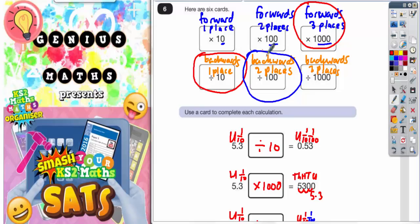how many zeros are there. So one place is one zero, two places is two zeros, three places is three zeros. Forwards is multiplying, and backwards is dividing. I'll see you next time. Bye-bye.